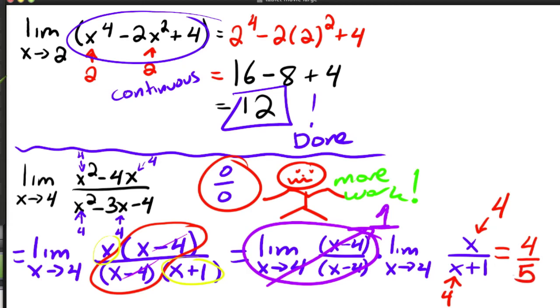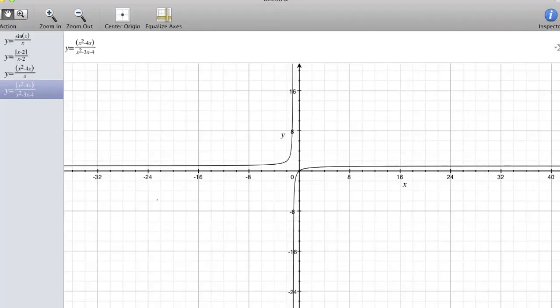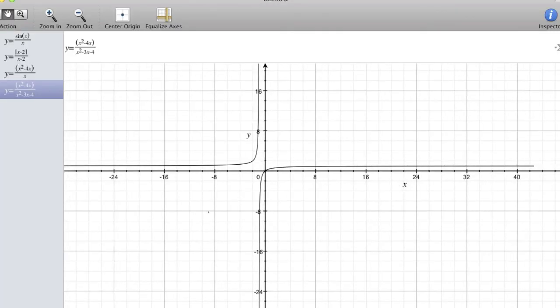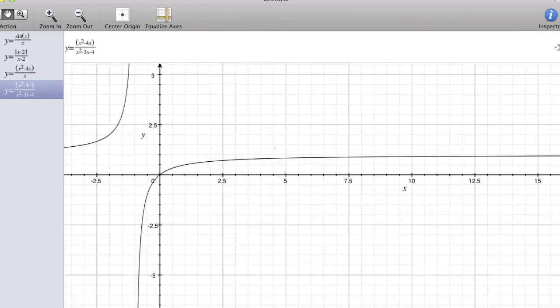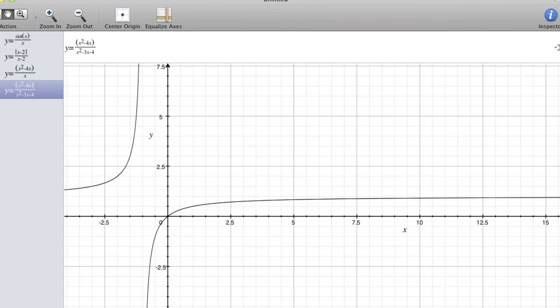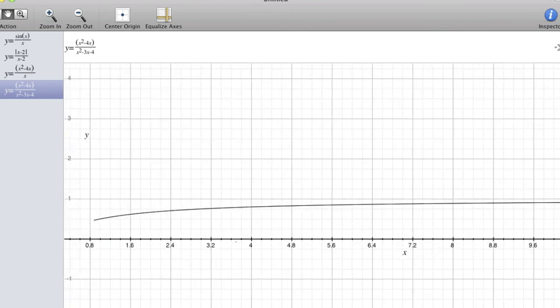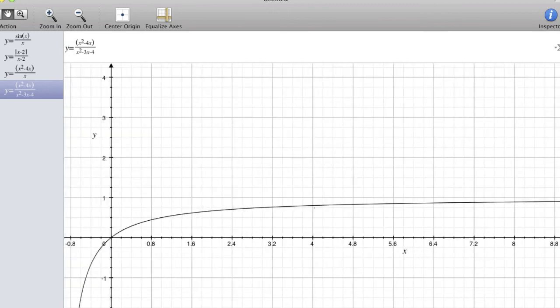And now let's take a look at the picture. So here I've got the picture. Now let's zoom in at around four. So here's x equals four.